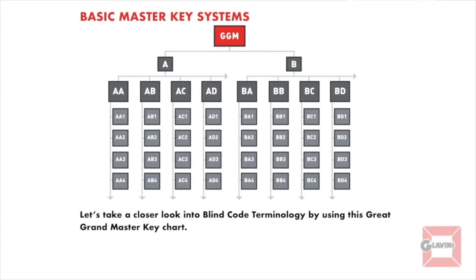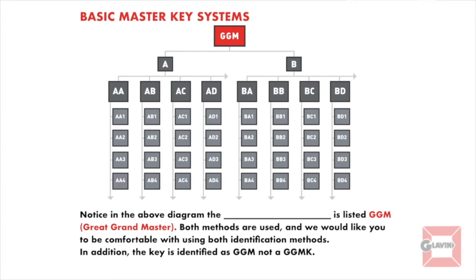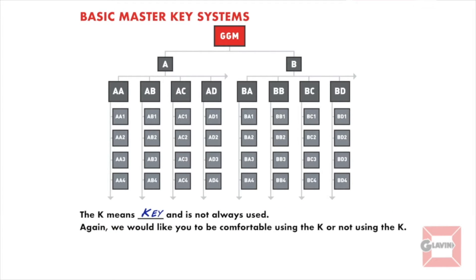Let's take a closer look into blind code terminology by using this great grand master key chart. Notice in the above diagram the top master key is listed GGM — great grand master. Both methods are used and we'd like you to be comfortable with using both identification methods. In addition, the key is identified as a GGM, not a GGMK. The K of course means key and it's not always used. Again, we'd like you to be comfortable using the K or not using the K.